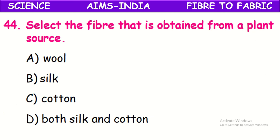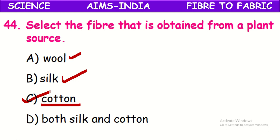Select the fiber that is obtained from a plant source. The options are wool, silk, and cotton. Wool is from animals and silk is also from animals, but cotton is from cotton plants, so it has a plant source. Cotton is called a plant fiber.